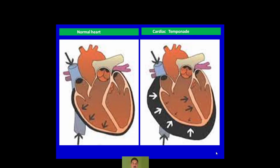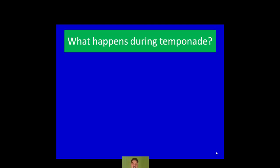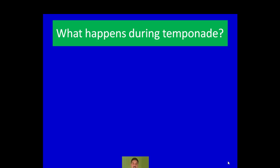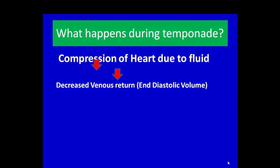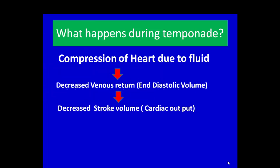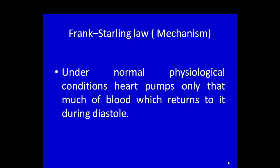Let us explain the development of cardiac tamponade. As shown in this slide, the heart is enclosed within the pericardium. Normally there is a small amount of pericardial fluid for lubrication. But in trauma, when there is accumulation of fluid or blood within the pericardial cavity, it impairs filling of the ventricle during diastole, leading to decreased cardiac output. The hemodynamic changes are: compression of the heart due to fluid, decreased venous return (end diastolic volume), leading to decreased stroke volume and cardiac output, resulting in decreased blood pressure and shock.